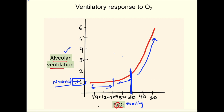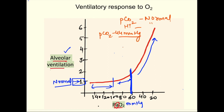This graph assumes partial pressure of carbon dioxide, hydrogen ions, and pH are normal and held constant. If they change, the response to oxygen also changes. For example, if arterial pCO2 increases from 40 to 44 mmHg, peripheral chemoreceptors will start responding to hypoxia earlier — the curve shifts.